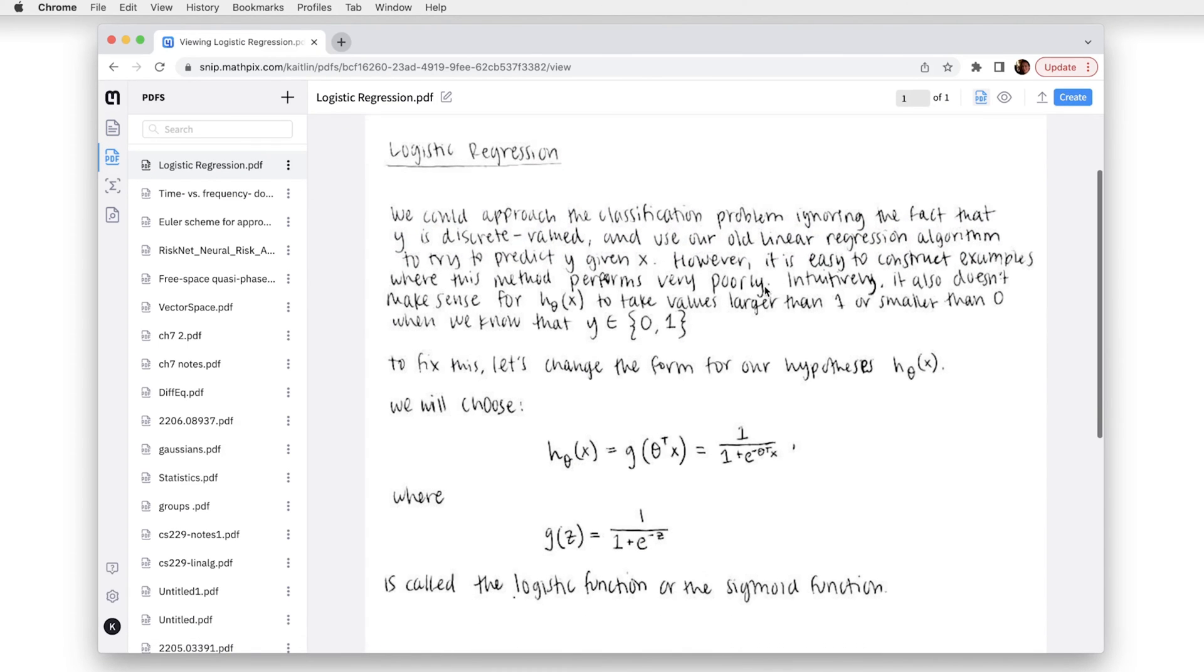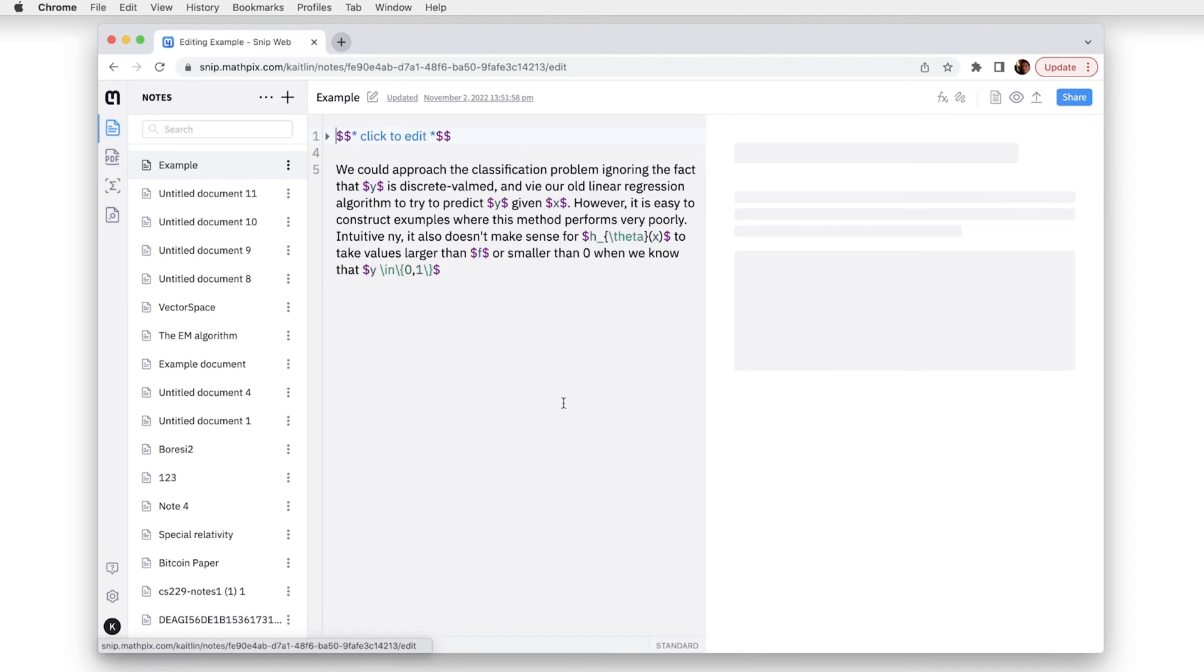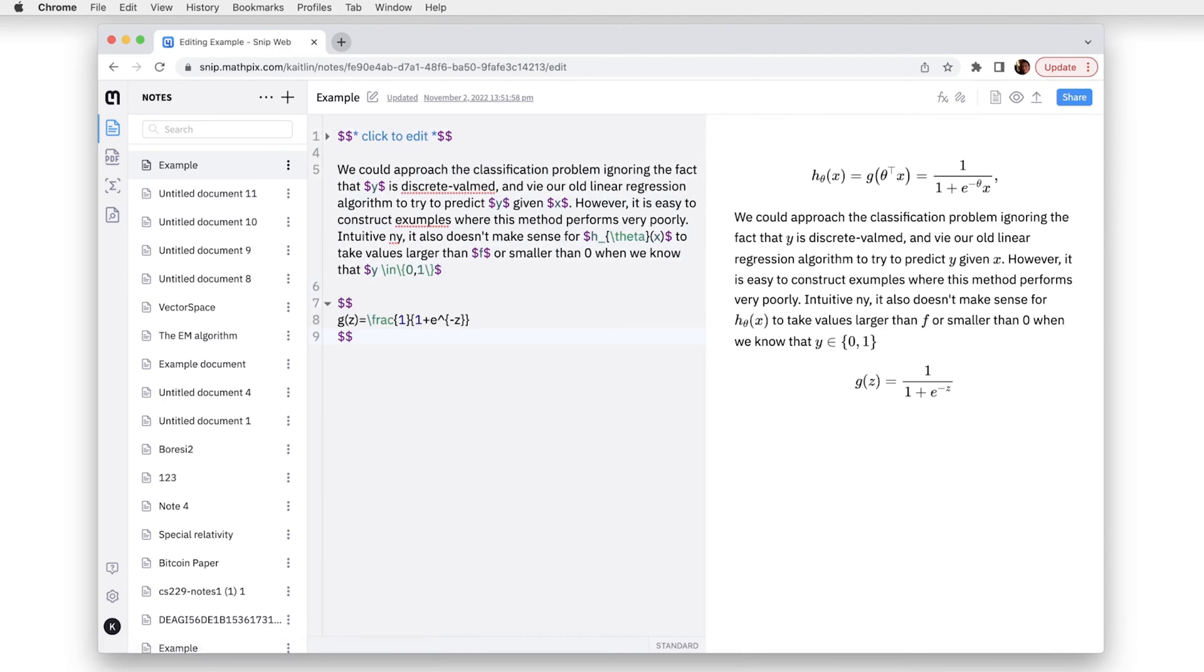Now the last way that you can copy from PDF is just by double-clicking the line. That'll select it for you. You can copy it. Here I just used my keyboard shortcut and that'll paste.